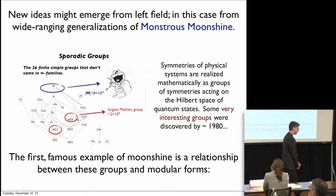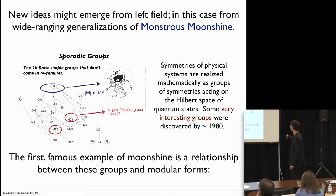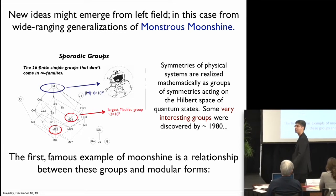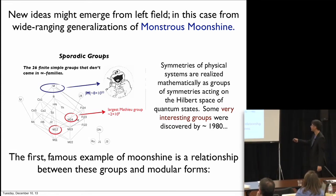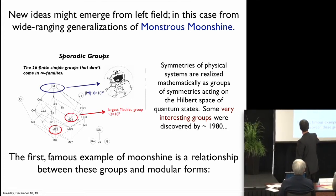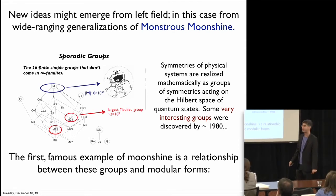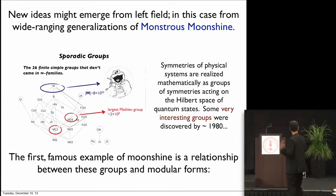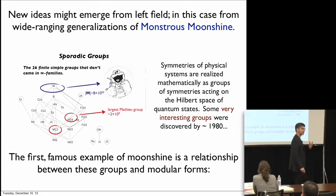What is monstrous moonshine? By the end of the last century, mathematicians closed in on the classification of the finite simple groups — these are generalized symmetries that you could imagine acting on the quantum mechanical Hilbert space of some physical system. They found that in addition to 18 infinite families, there were 26 oddballs — coincidentally the critical dimension for the bosonic string. The biggest of these is the Fischer-Griess monster, with order 8 times 10 to the 53. There's a nice web of them, unified in this monstrous structure. Moonshine was a mathematical observation with no physical content at first, relating these deep and oddball structures in group theory to another very interesting and rich part of mathematics.